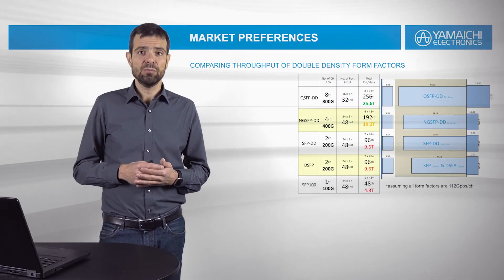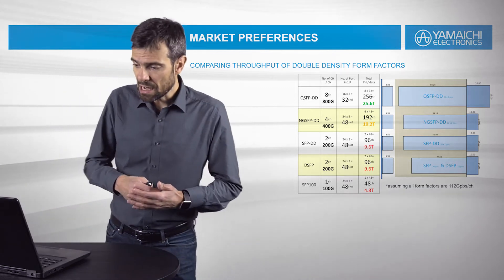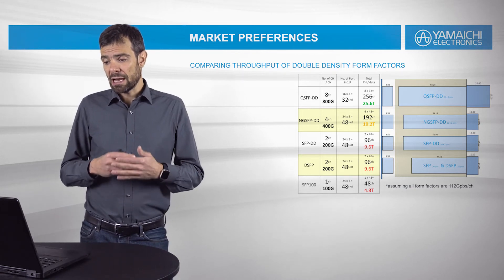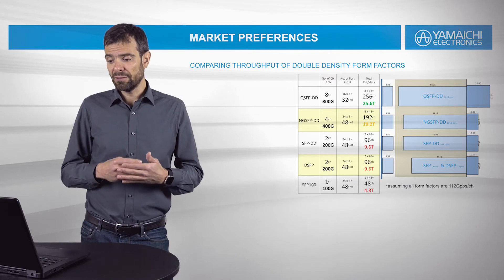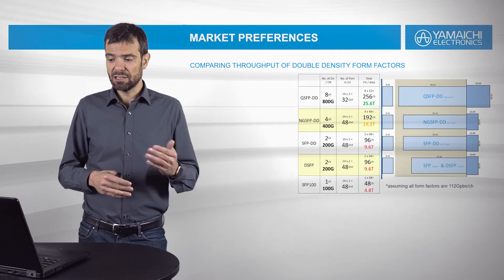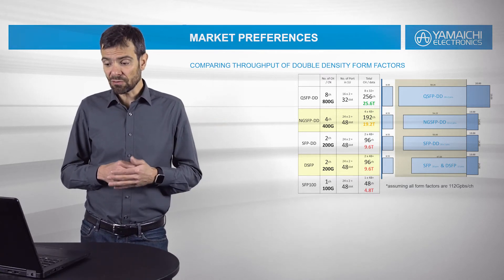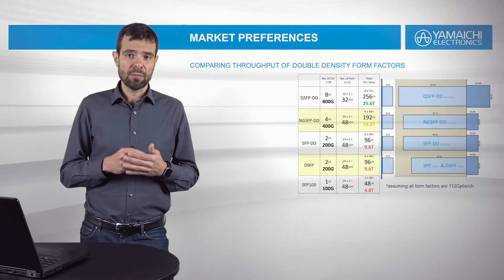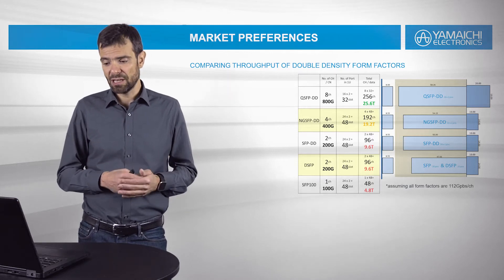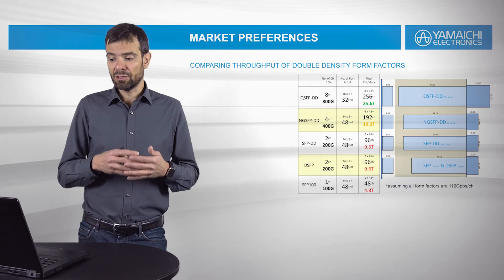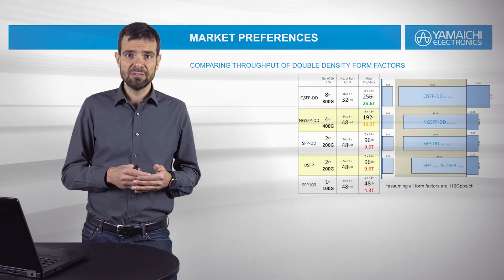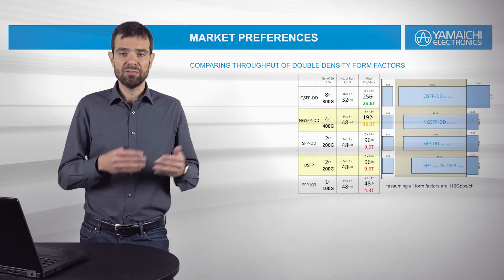If we talk about double density, we should also talk about density itself. In this table you can see we assume QSFP-DD can have a throughput of 25.6 Tera on a standard rack unit, achieved with 32 slots. For NGSFP-DD, the number of slots is actually higher at 48, same as SFPDD, DSFP, and SFP100. However, the total data throughput for NGSFP-DD is 19.2 Tera, for SFPDD it is exactly half, and then it decreases further.